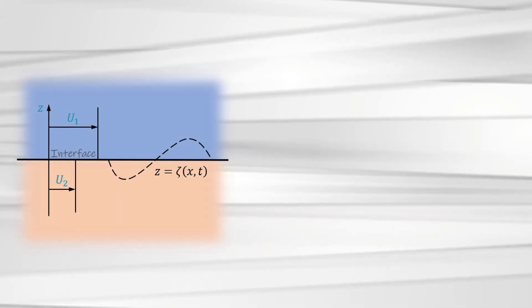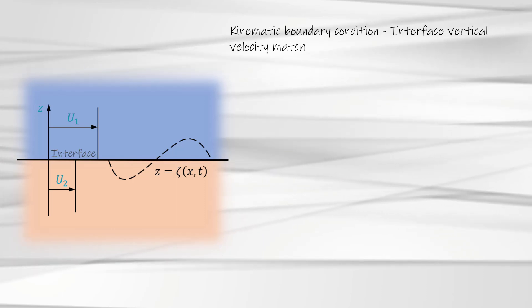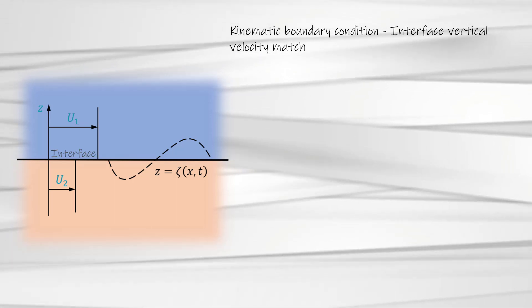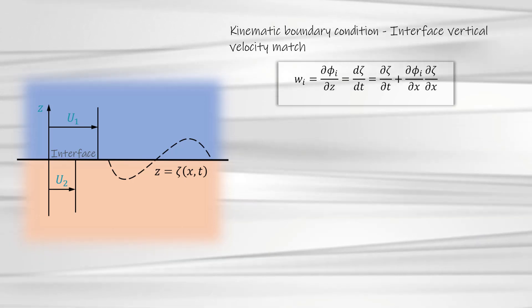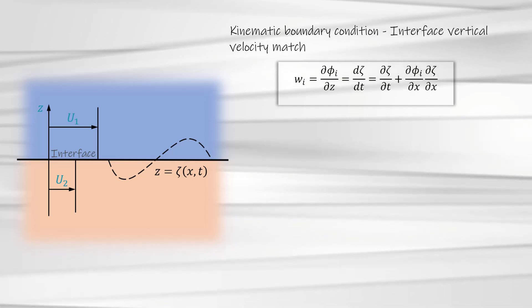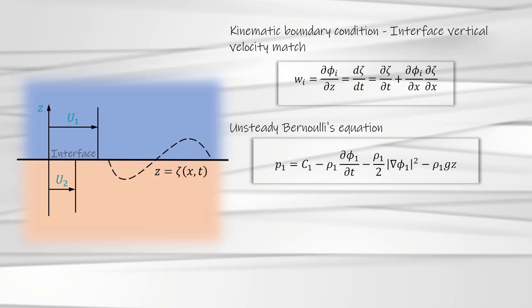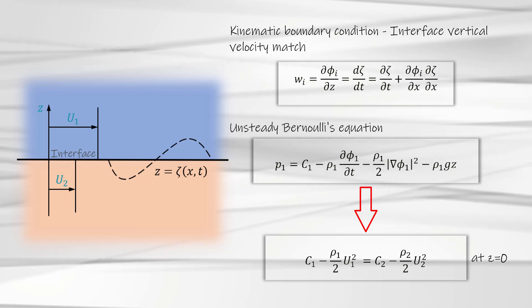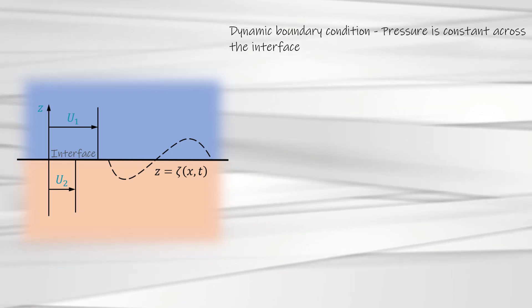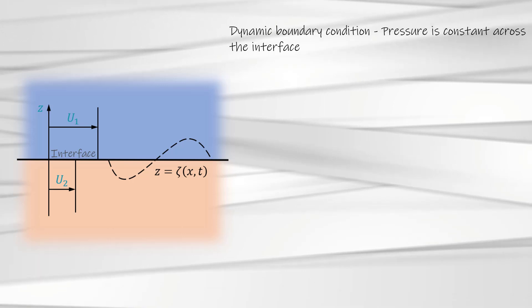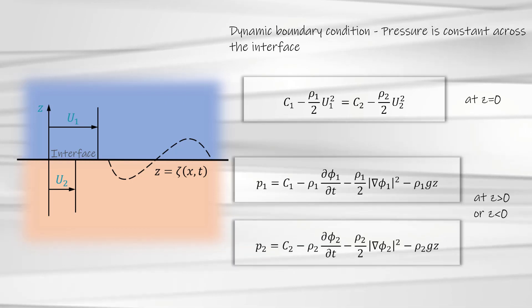There are two types of interface boundary conditions this system of equations need to satisfy: Kinematic and Dynamic. The kinematic condition at the interface requires that the vertical velocity of the two fluids match. Mathematically, this can be written as shown here. Since the fluid flows are assumed to be potential, the pressure in each of these fluids satisfies the unsteady Bernoulli's equation which is shown here. For the base undisturbed flow, this equation reduces to the form given here. The dynamic condition at the interface requires that the pressure is constant across the interface. Based on this, we can write the following relations at the interface between the two fluids before and after imposing the disturbance.